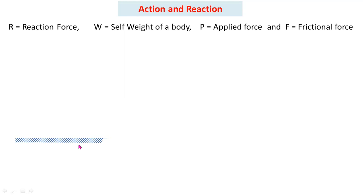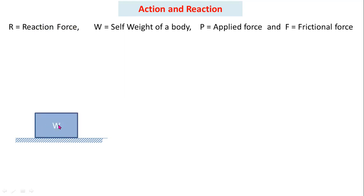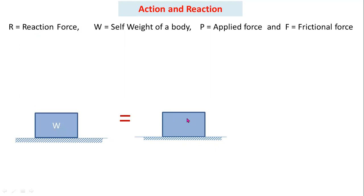This is a rough horizontal plane and I am placing a block of weight W on it. You have to draw action and reaction forces. W is the action — the self-weight. Self-weight of any body always acts vertically downwards, so I am drawing this vertical force for self-weight.